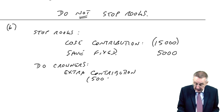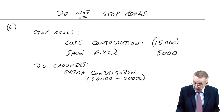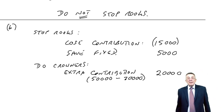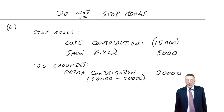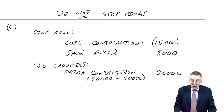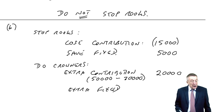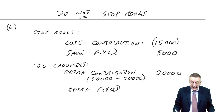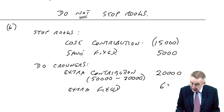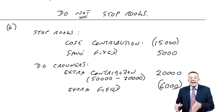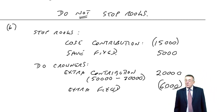Contribution is sales less variable costs — 50,000 minus 30,000 — giving 20,000 extra profit from where we currently are. But there'll also be extra fixed costs of 6,000 for doing crowners, and on its own an extra 6,000 cost would mean less profit.